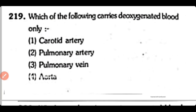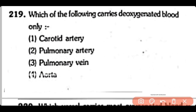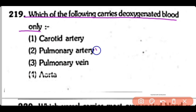Q219. Which of the following carries deoxygenated blood only — carotid artery, pulmonary artery, pulmonary vein, or aorta? So the correct answer is Option 2 — the pulmonary artery carries deoxygenated blood.